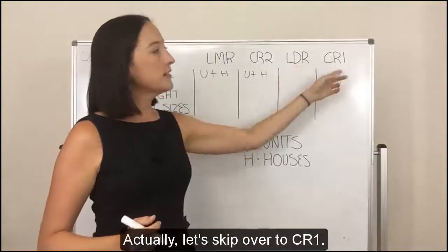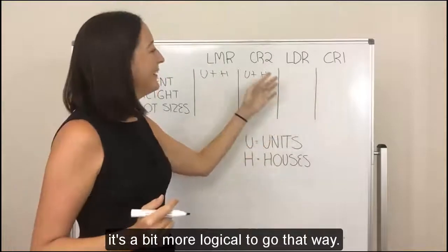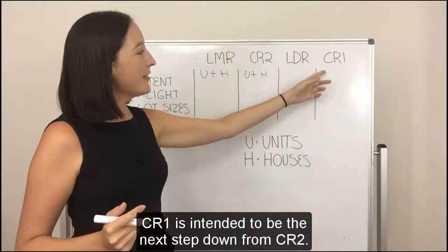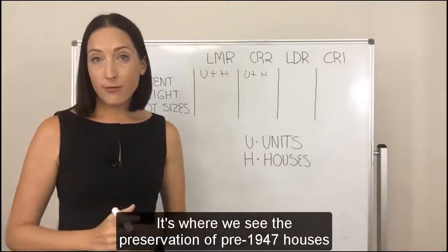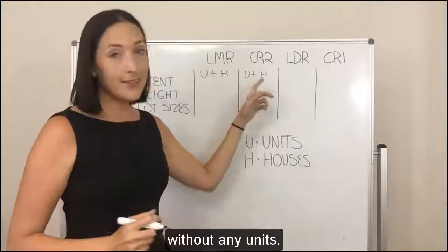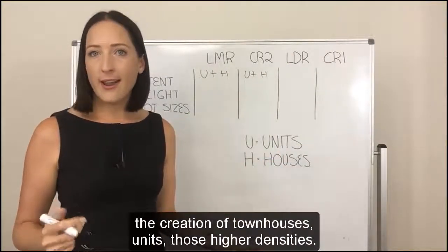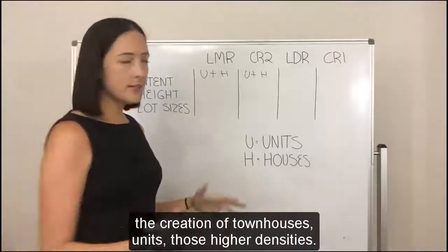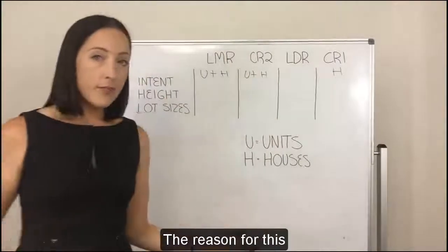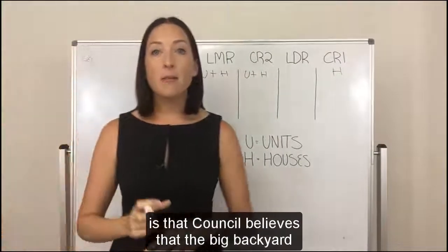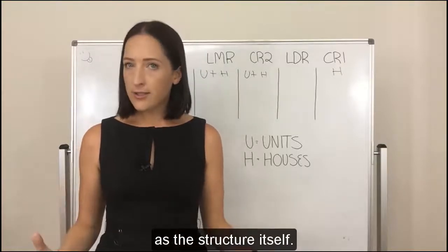Let's skip over to CR1 — it's more logical to go that way. CR1 is intended to be the next step down from CR2. It's where we see the preservation of pre-1947 houses without any units. In this zone, council actively discourages the creation of townhouses, units, and those higher densities. So it is literally just houses.